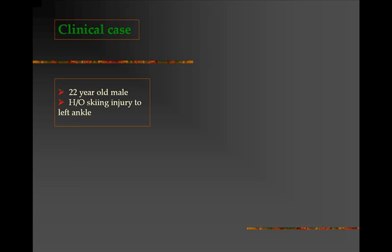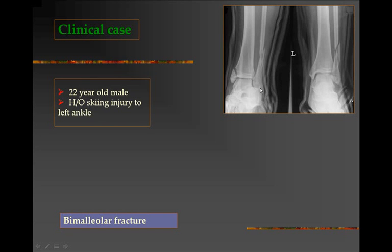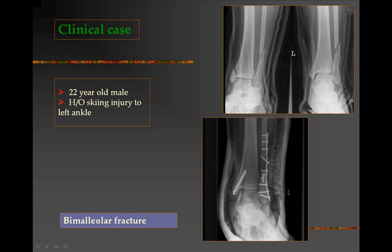Here is a clinical case of a 22-year-old male who sustained a skiing injury to his left ankle. The x-ray shows a fracture running through the medial malleolus and a fracture running through the distal part of the fibula. Technically this is called a bimalleolar fracture, though the lateral malleolar fracture is quite superiorly in the shaft of the fibula. This needs open reduction and internal fixation with plates and screws — fixed here with two malleolar screws through the medial malleolus and a plate on the lateral side of the fibula with several screws through the shaft.